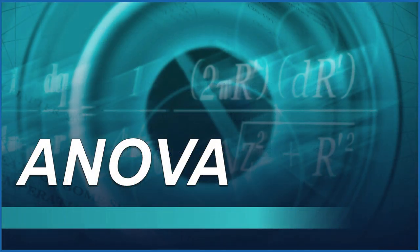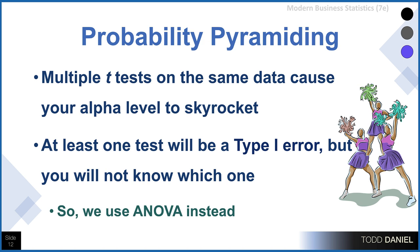The next area we went into was ANOVA. Let's review why we need it. The problem solved by ANOVA has to do with t-tests — which are wonderful, but each t-test has a 0.05 level of error. Five times out of 100, you will get an extreme score that looks statistically significant but isn't truly different. If you have multiple t-tests, each with a 0.05 error rate, we have the problem of probability pyramiding, where the error rate starts to increase dramatically.